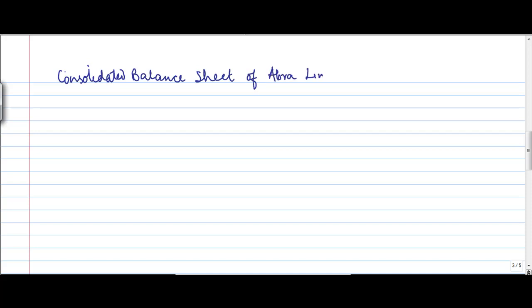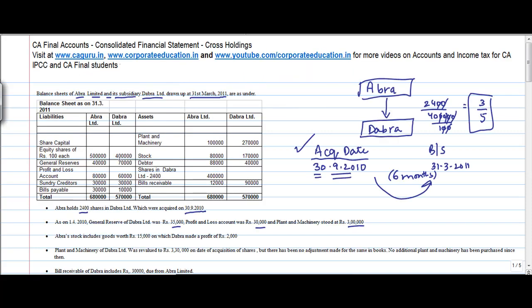Abra Limited. Now let me go back. Abra's stock includes goods worth Rs. 15,000 on which Dabra made a profit of 2,000. Plant and Machinery of Dabra Limited was revalued to Rs. 3,30,000 on date of acquisition of shares but there has been no adjustment for the same in the books of accounts.